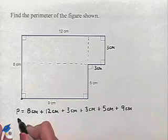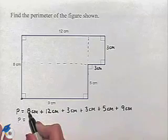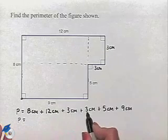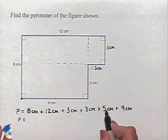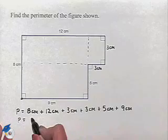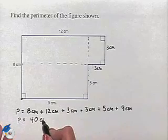Now let's add those values together to give us our perimeter. 8 plus 12 is 20, plus 3 is 23, plus 3 is 26, plus 5 is 31, plus 9 is 40. So our perimeter is 40 centimeters.